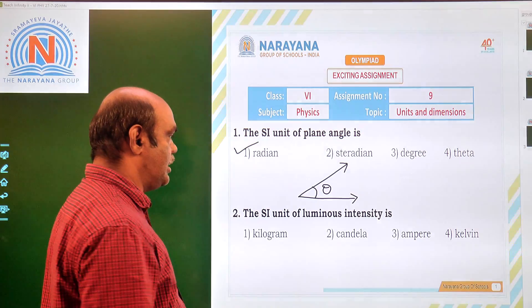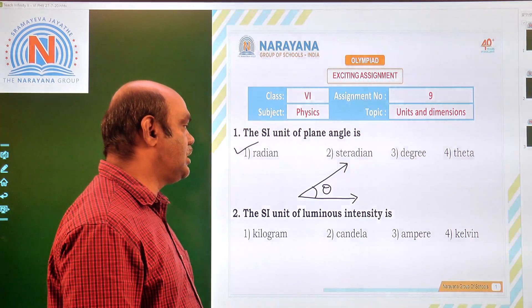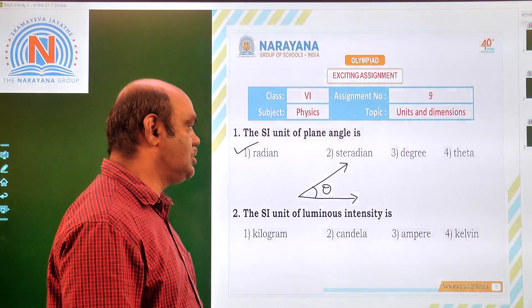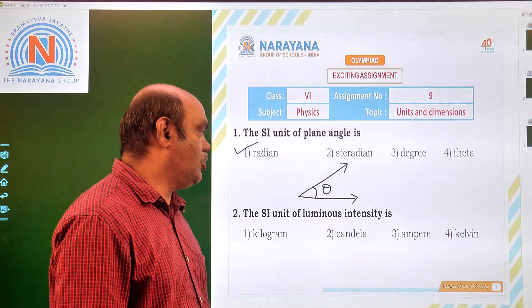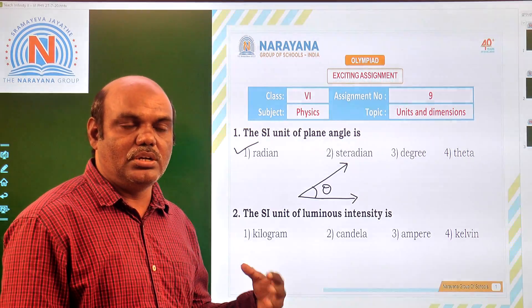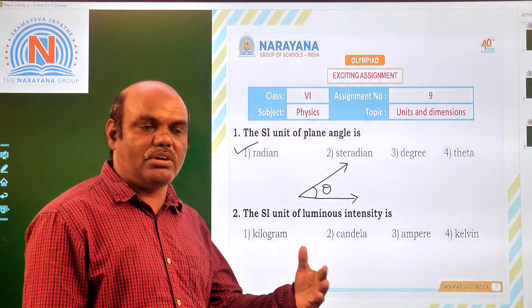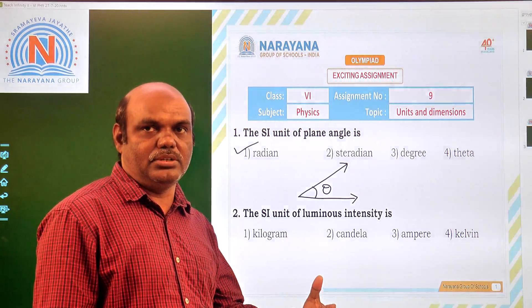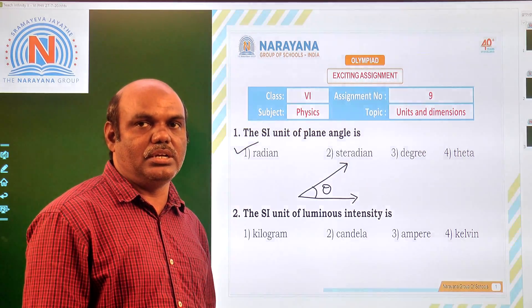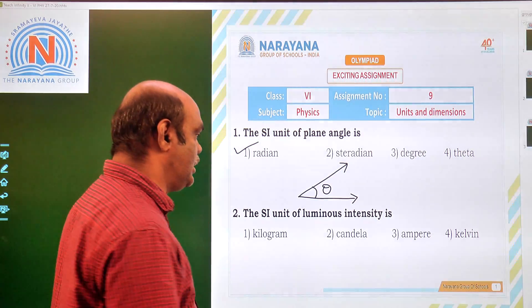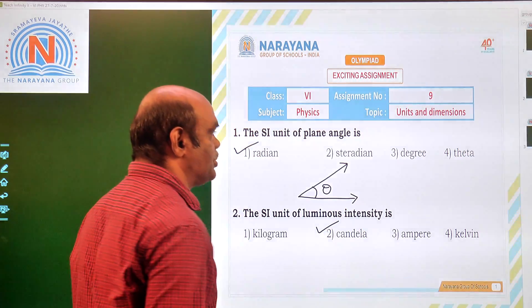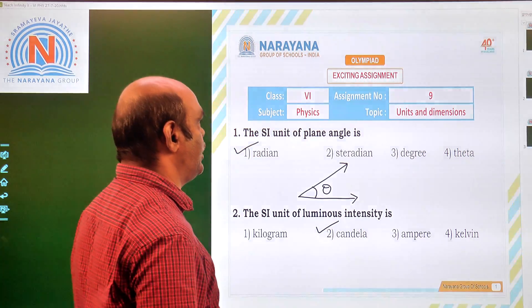Second one: the SI unit of luminous intensity. Luminous intensity is nothing but the amount of intensity of light emitted. We can measure it in the unit candela. So the second option is correct.